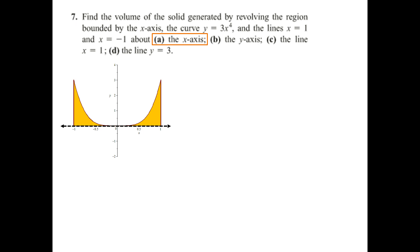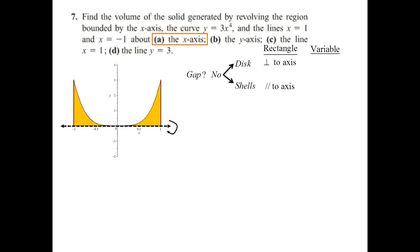The question you ask at the beginning is: is there a gap between your region and your axis? Is it flush up against there? And the answer is no. When the answer is no, you have to choose between either disk or shells. When the problem is done with disk, you draw a typical rectangle that is perpendicular to the axis. When it's done with shells, you draw one that's parallel to the axis.